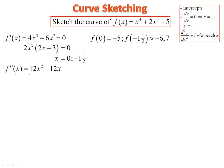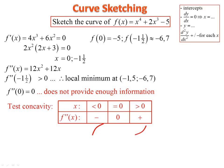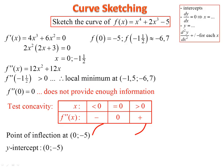Differentiate to find the second derivative. Substituting negative 1.5 into the second derivative using a calculator gives a positive — so there's a local minimum at (−1.5, −6.7). Substituting zero gives zero, which is inconclusive. Draw up a table: test at negative one and one. We get a negative second derivative before zero (concave down) and a positive after zero (concave up), so there's a point of inflection at (0, −5). The y-intercept is also (0, −5).